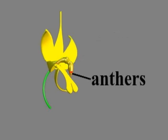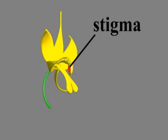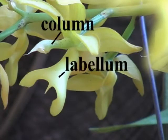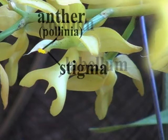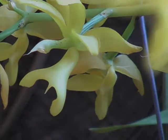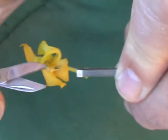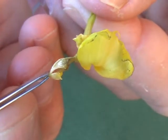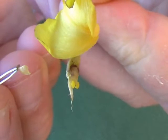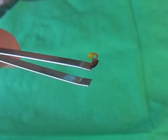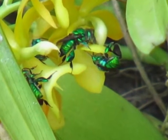The column contains the reproductive organs. The tip of the column contains the anthers, hidden under a cap, while the stigma is on the underside of the column behind the anthers. Removing the anther cap reveals the pollinia — the two pollen masses. The pollinia are connected to a sticky pad, which securely binds them to visiting insects and plays a key role in pollination.